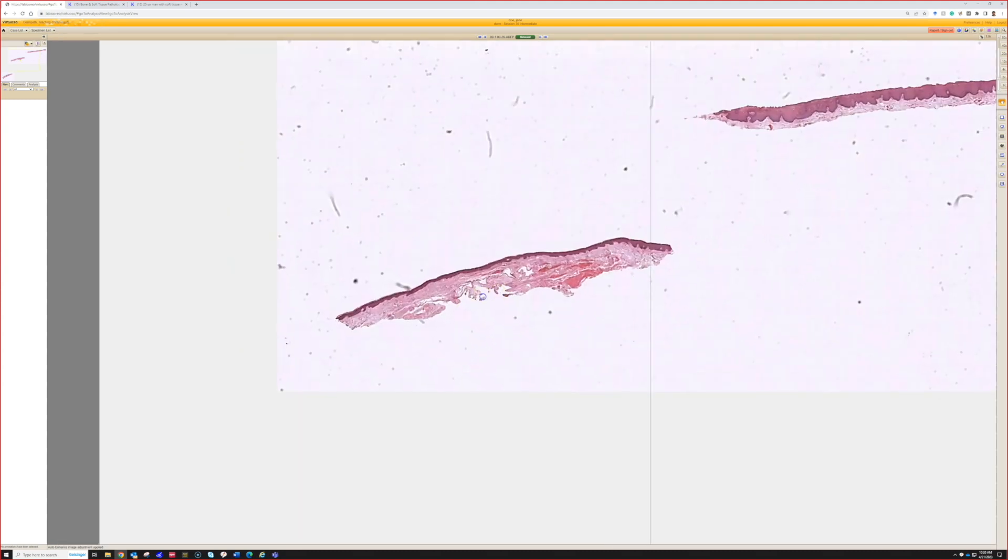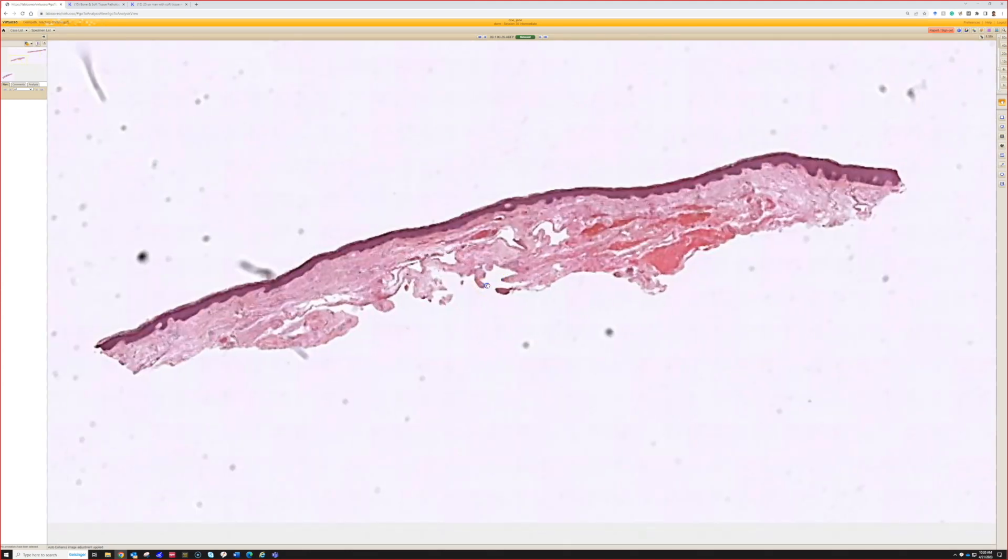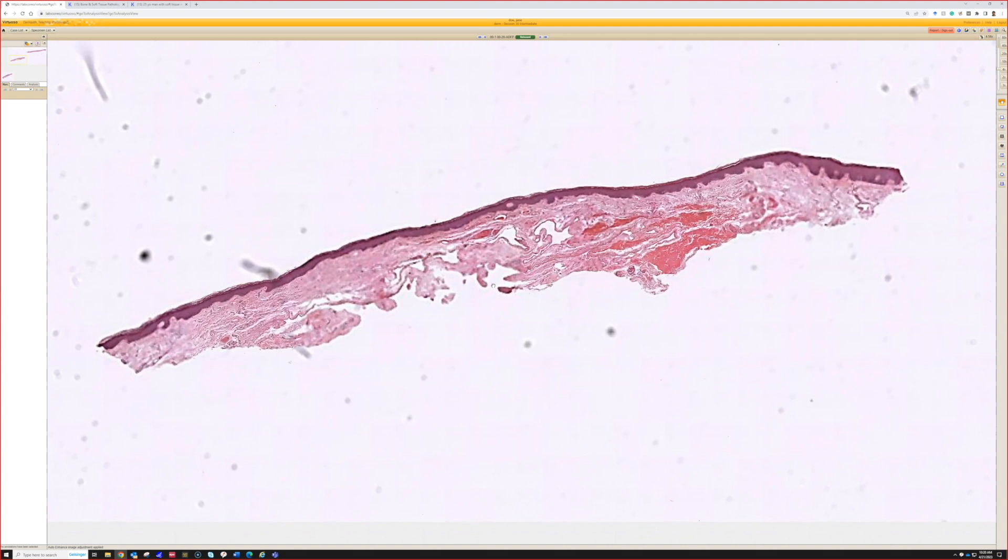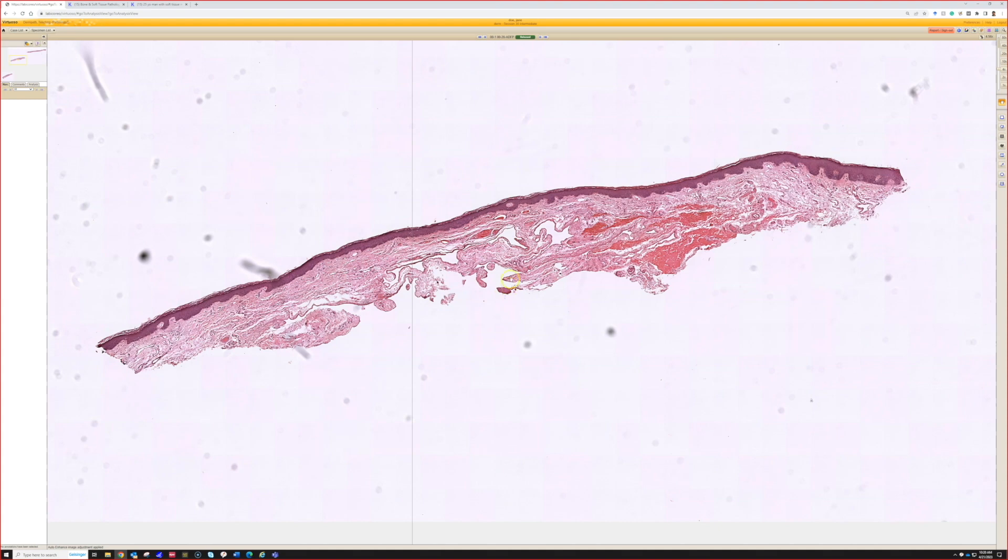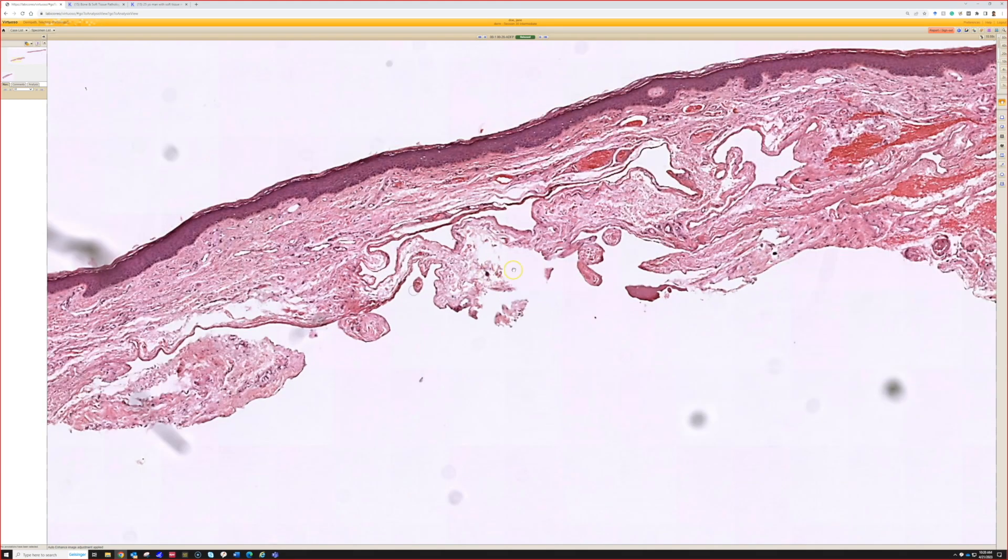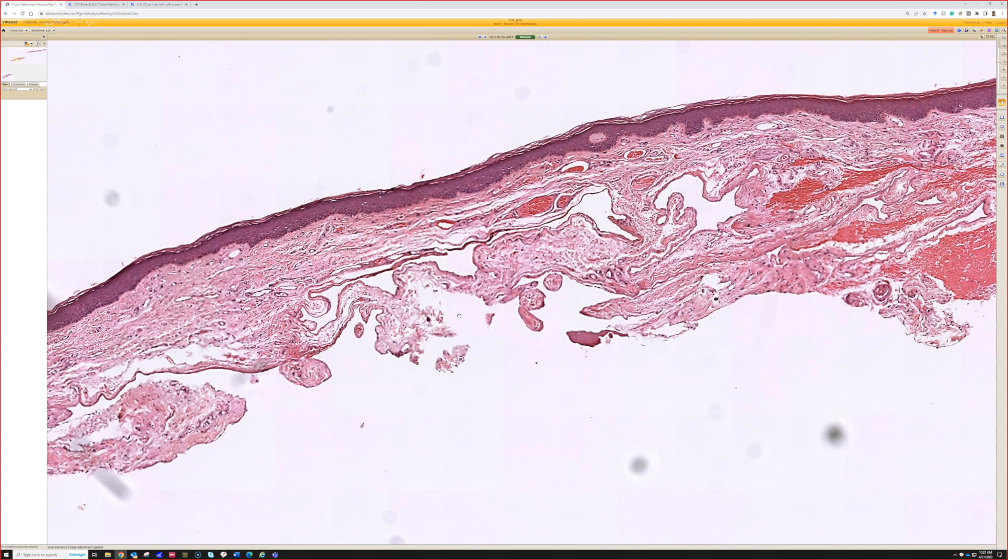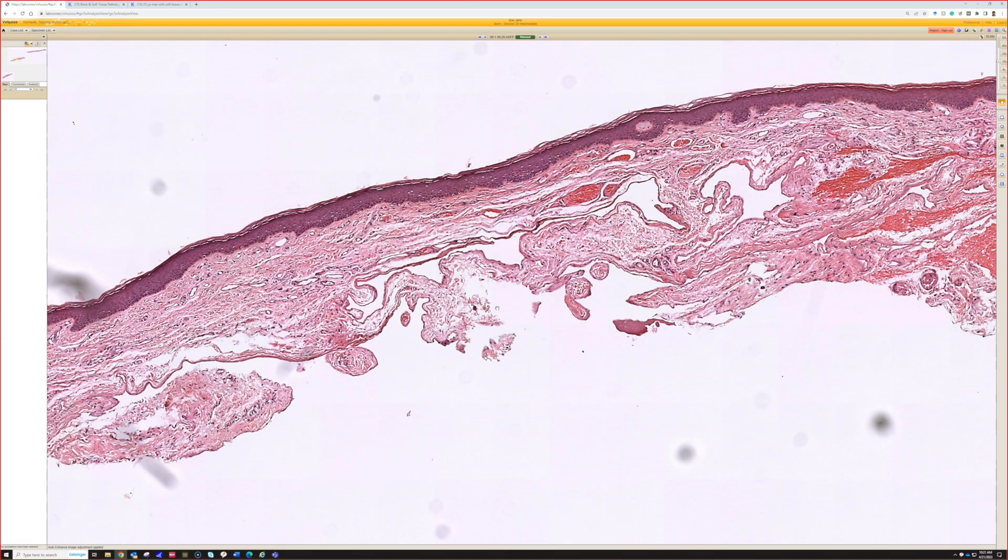Okay, case 26. All right, so we have a kind of superficial shave here, and really all we see are these dilated vascular spaces, thin-walled spaces. Things we could think about like cherry angioma, but they're just kind of loose and just a dilated space.